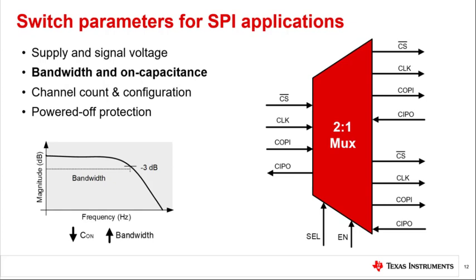Another key characteristic is bandwidth. SPI does not have a specified max bus capacitance or set clock speed. Therefore, to minimize signal integrity loss, it is advised to pick a MUX with a bandwidth that is 1.5 to 3 times the clock speed. The parasitic C-ON of the MUX slows the rising and falling edges of the signal, which leads to some attenuation. Using a MUX with high bandwidth produces sharper rise and fall edges. Applications with a sensitive signal chain would benefit from a higher bandwidth MUX at 3 times the clock rate, while less sensitive signal chains benefit from a MUX with a bandwidth 1.5 times the clock rate.